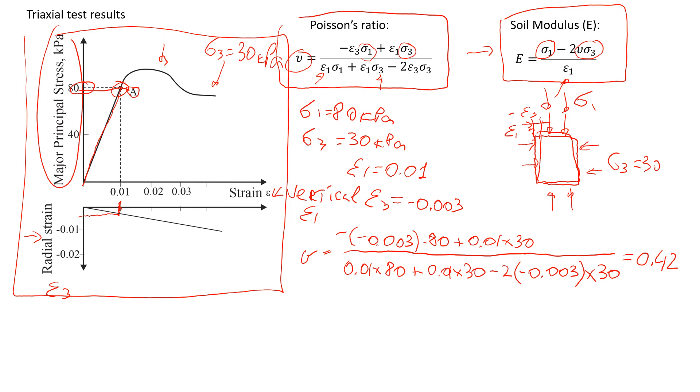Now let's estimate the soil modulus value, which is capital E. In this case, major principal stress is 80 minus 2 times Poisson's ratio, which we just found is 0.42, times minor principal stress, which is 30, divided by axial deformation, which we already know is 0.01. The answer should be in kPa, kilopascals. It will be 4,468.8 kPa.